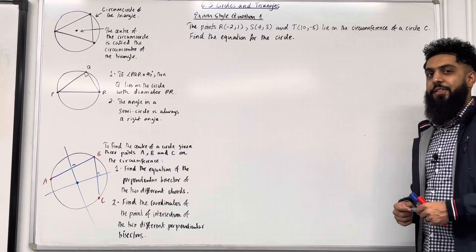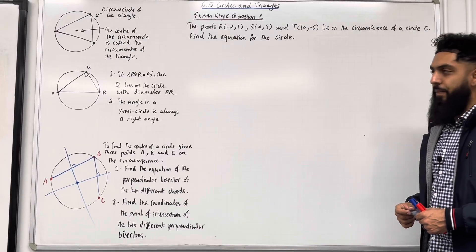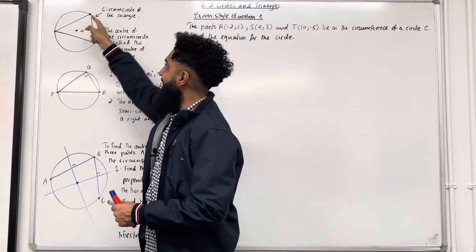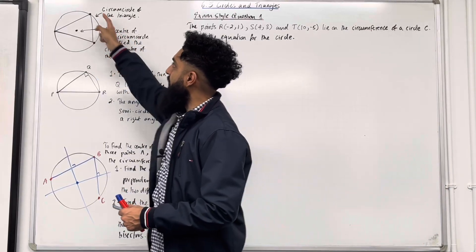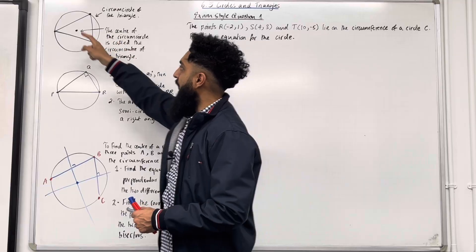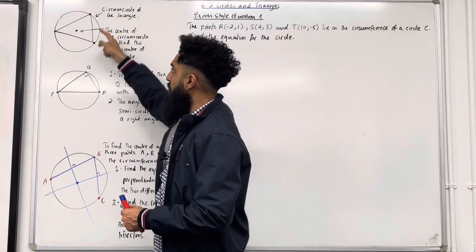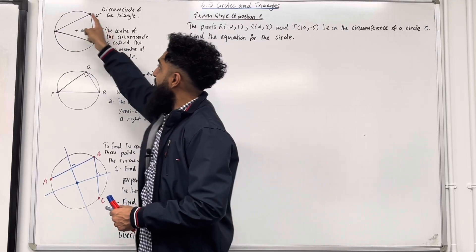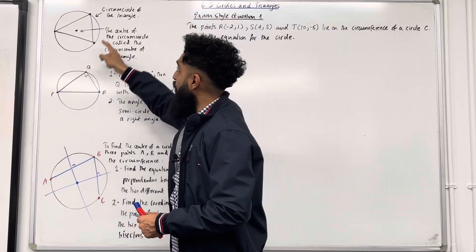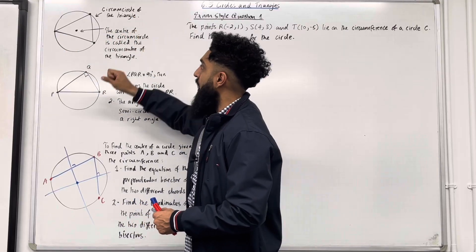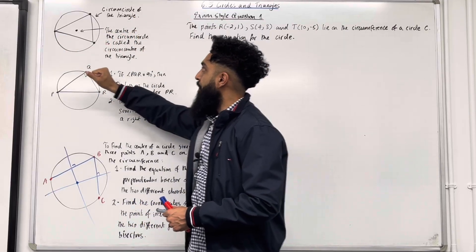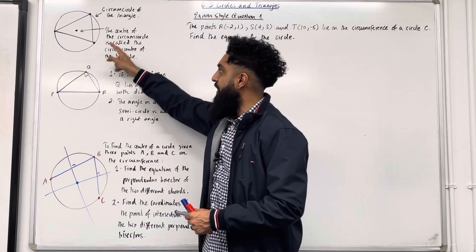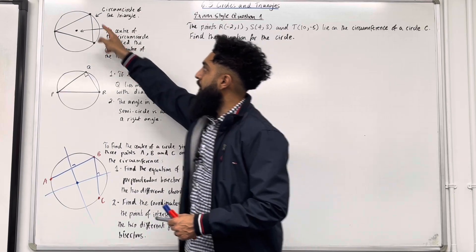Let's have a look at the key facts of this section. First diagram: I've got a circle drawn with three points labelled on the circumference. A triangle is drawn within the circle and the centre is labelled. This circle is called the circumcircle of the triangle, and this centre is called the circumcentre of the triangle.